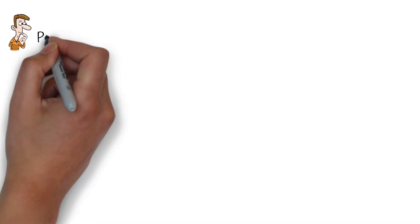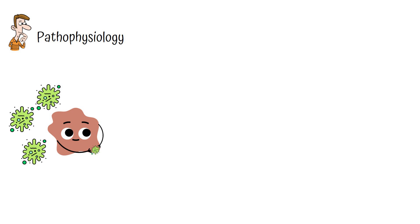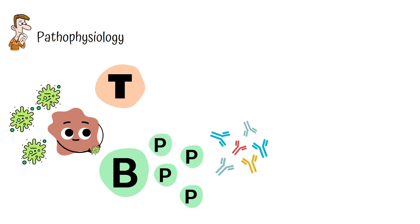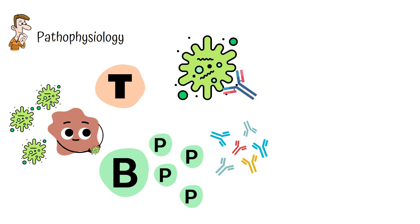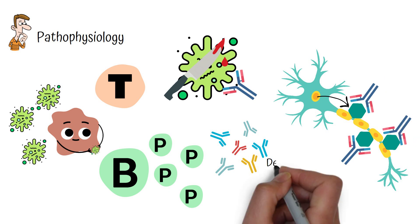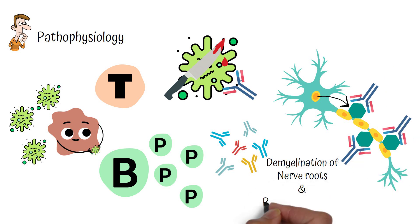Now let's look into the pathophysiology of Guillain-Barré syndrome. Following an infection such as Campylobacter jejuni, our antigen-presenting cells will present these microbial antigens to T and B lymphocytes. The B lymphocytes then differentiate into plasma cells which secrete antibodies. These antibodies bind to bacterial antigens to kill the bacteria. However, our nerve cells also express proteins similar to these bacterial antigens, so the antibodies get confused and bind to antigens expressed by the nerves, resulting in demyelination of nerve roots and peripheral nerves.